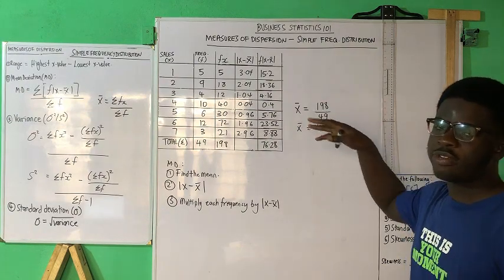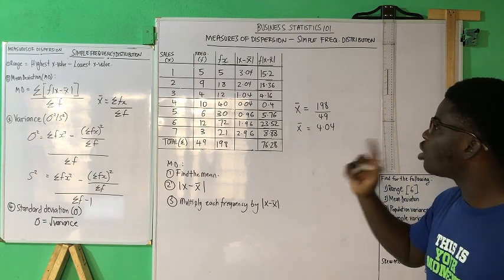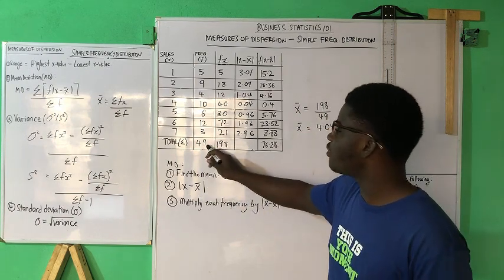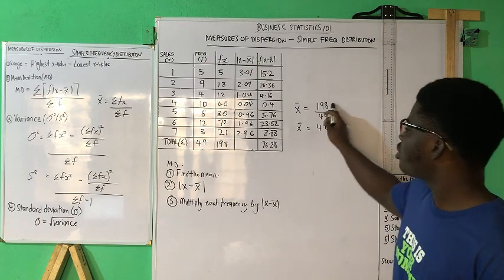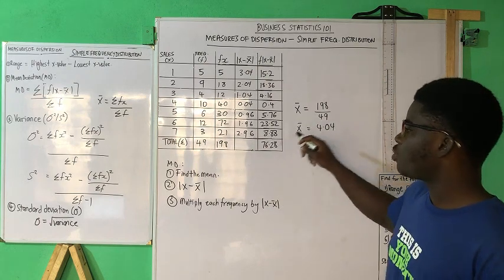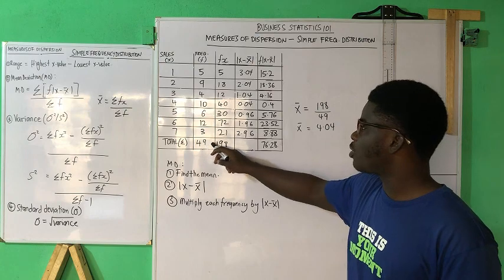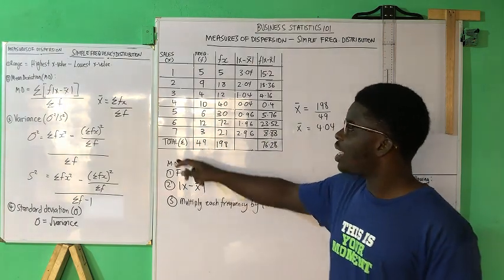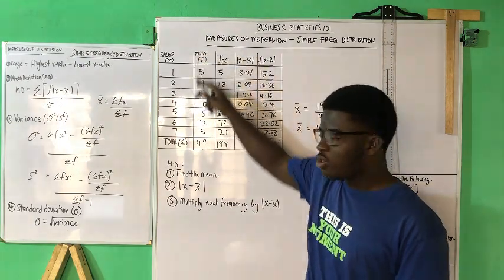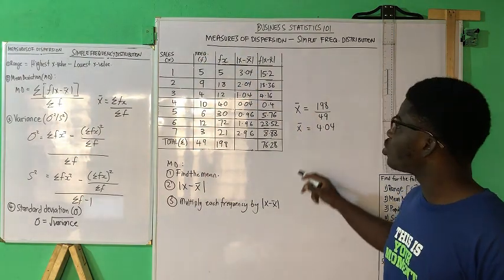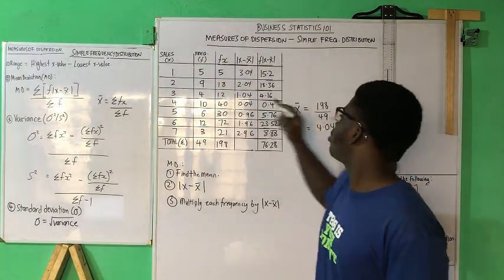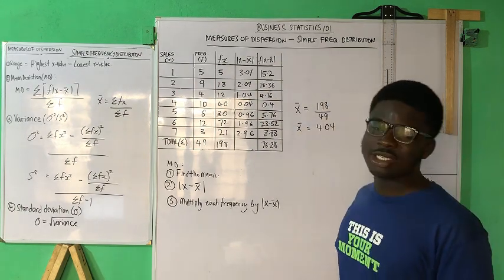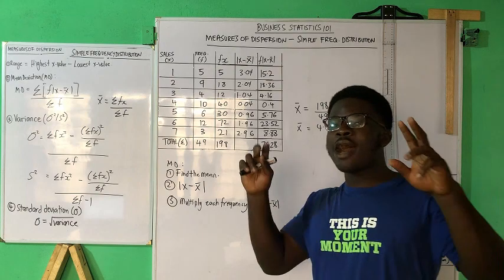I've put the figures in — let me thoroughly explain it. The first step: we found the mean using the first two columns, which gives us 4.04. From this point we move on to the second step: obtaining the absolute difference between the x values and the mean. So one minus 4.04, two minus 4.04, and so on — these are the answers, and since we're taking the absolute value, no negative signs appear.